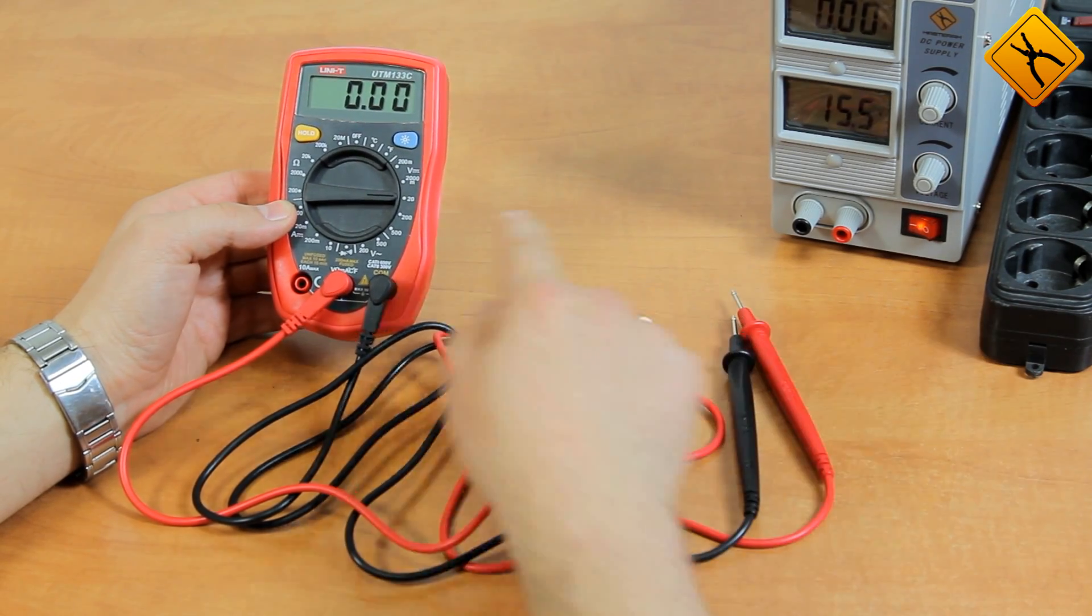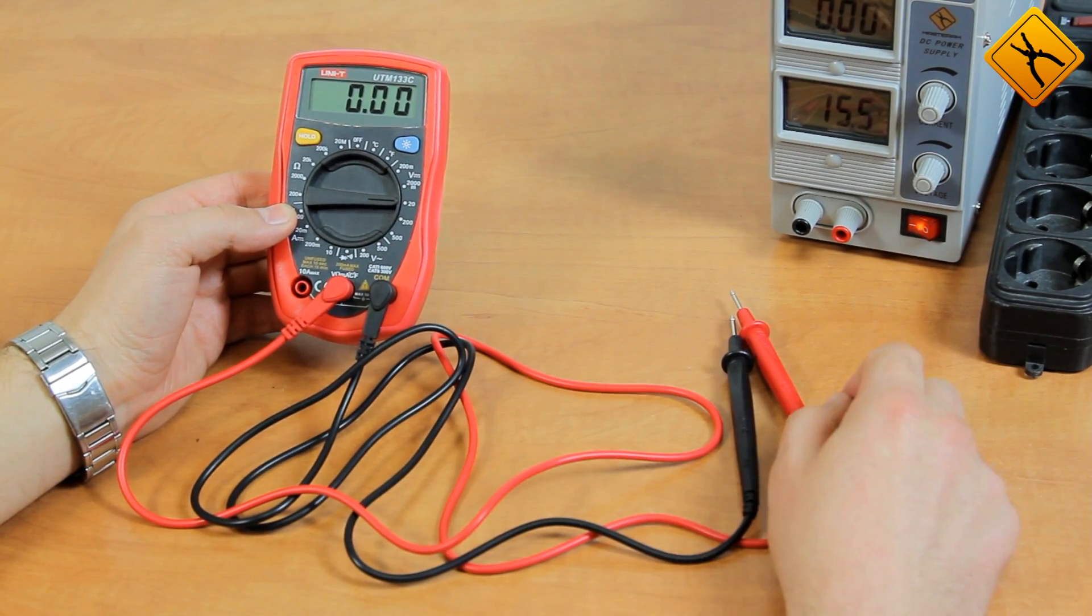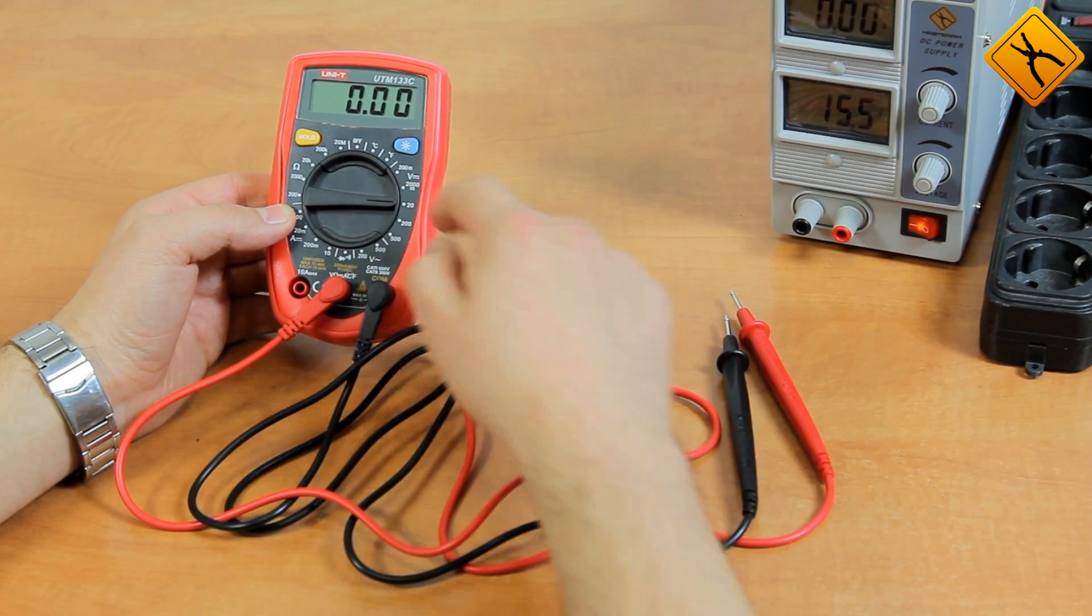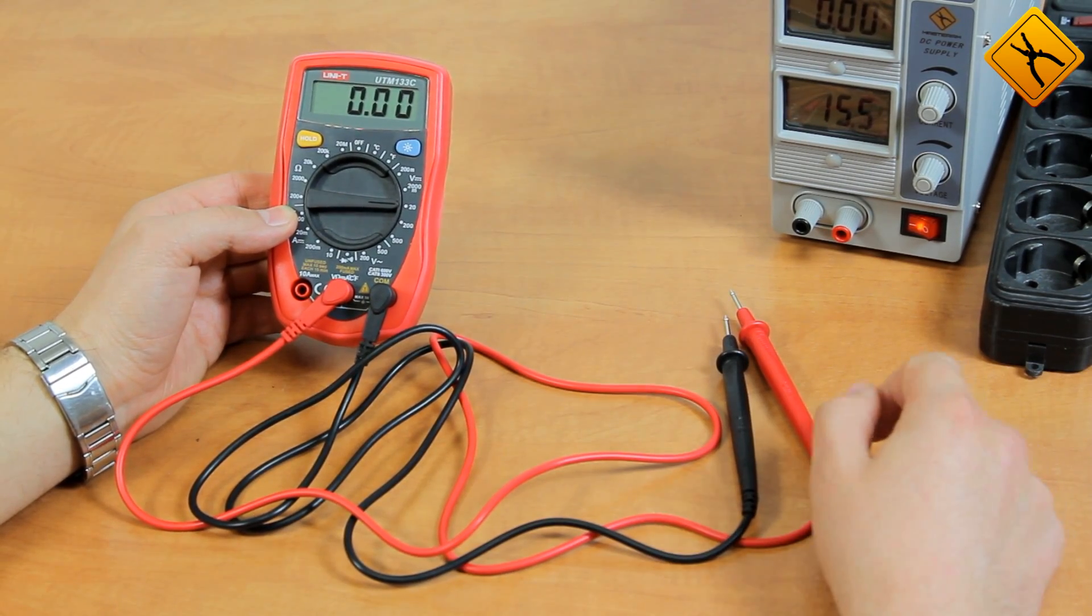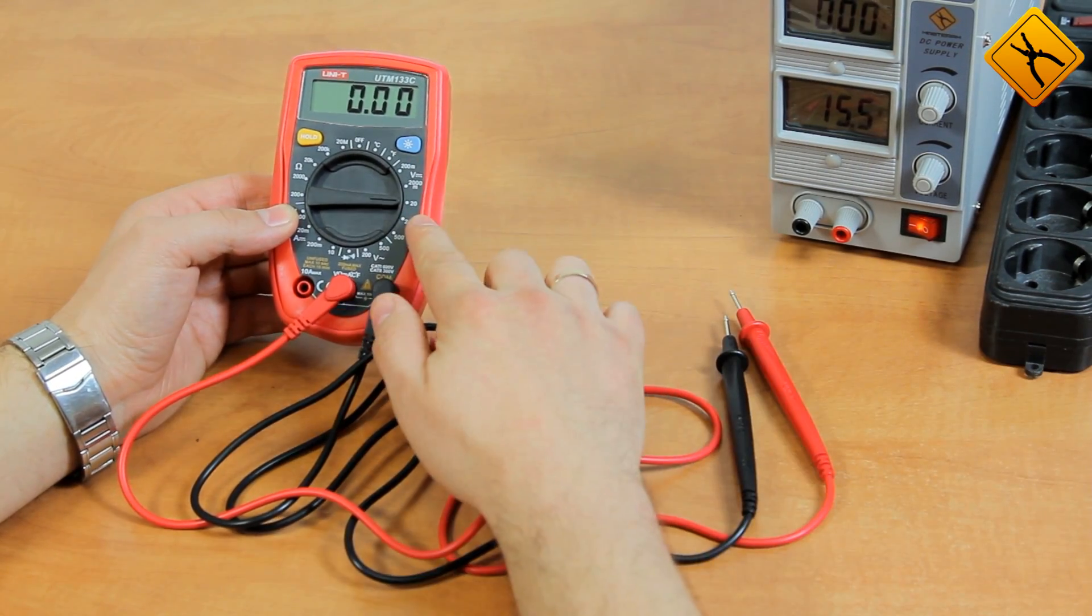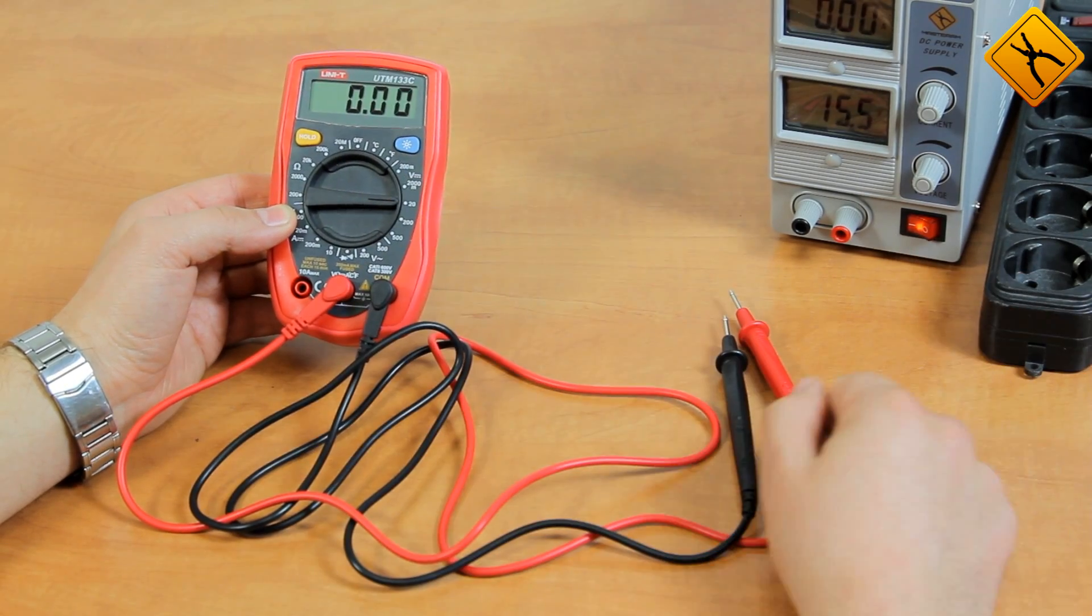That's how to measure voltage. There is no need to change the range to 200mV, because the value exceeds this range and the device may be damaged. This meter has a protection, but anyway, you should not do that.